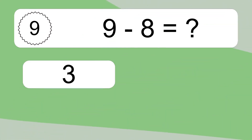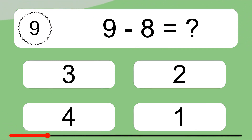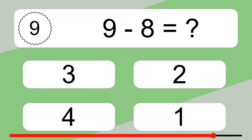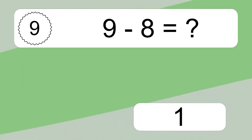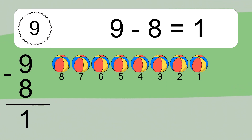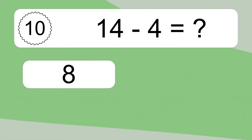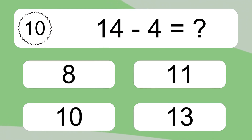9 minus 8 equals what? 9 minus 8 equals 1. Let's count it. 8, 7, 6, 5, 4, 3, 2, 1.